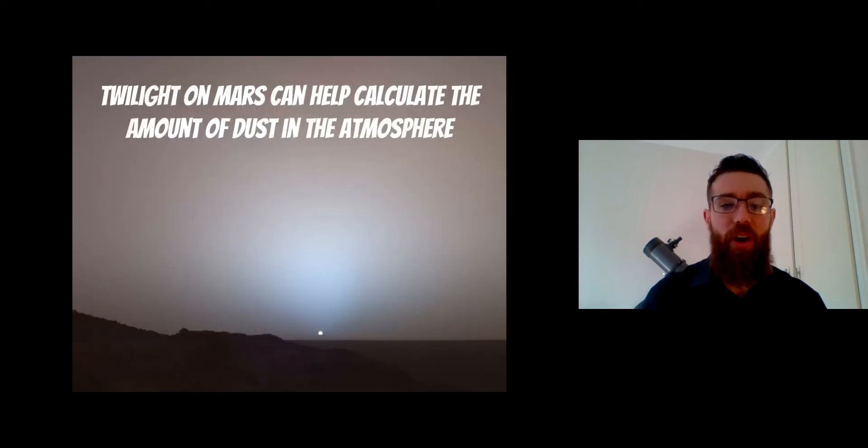Here's a nice image taken by one of the rovers as the Sun is just setting on Mars. You'll notice it's got a bit of a blue color, and that comes from the scattering of the dust particles as the Sun is setting, which is kind of the opposite of what we would see on Earth.